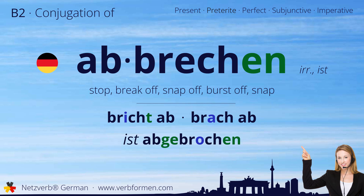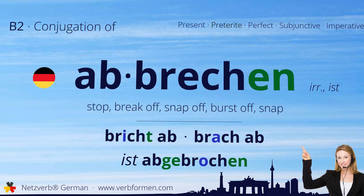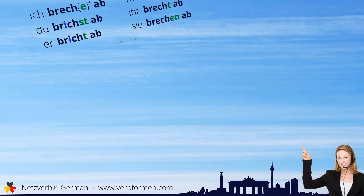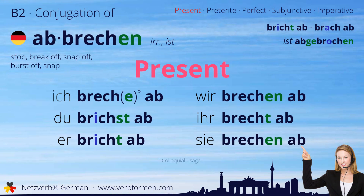Now let's move on to the tenses. First, we'll take a look at the present tense: ich breche ab, du brichst ab, er bricht ab, wir brechen ab, ihr brecht ab, sie brechen ab.